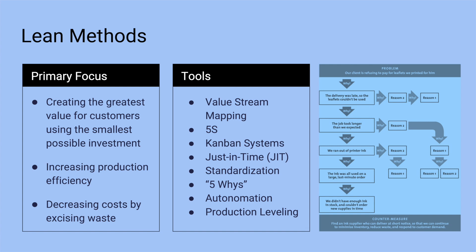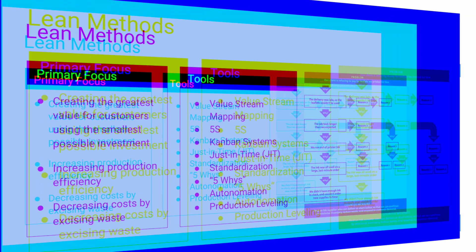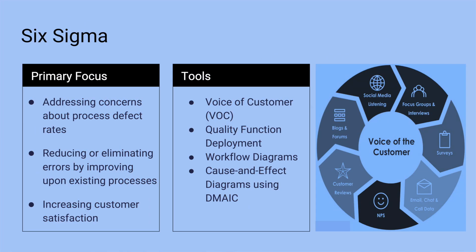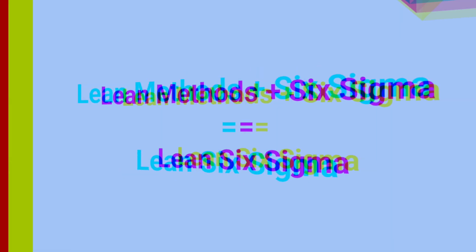This approach utilizes such tools as value stream mapping, the five S's, just-in-time, and the five whys. Six Sigma focuses on addressing concerns about defect rates in existing processes. This approach necessitates process improvements to reduce or eliminate errors and is based on the continual pursuit of improvement. It utilizes such tools as voice of customer, workflow diagrams, and cause-and-effect diagrams.